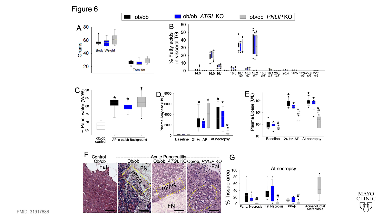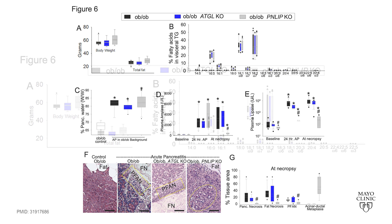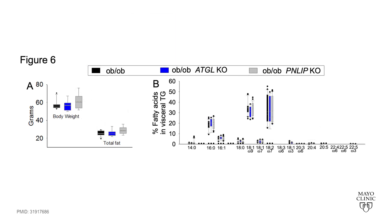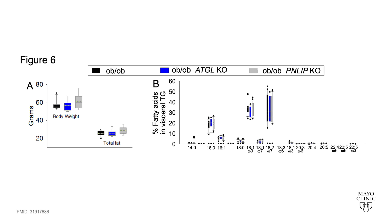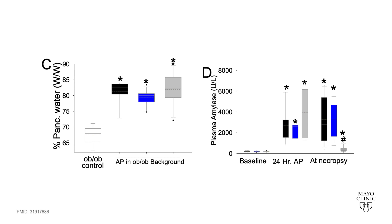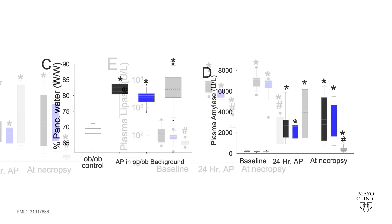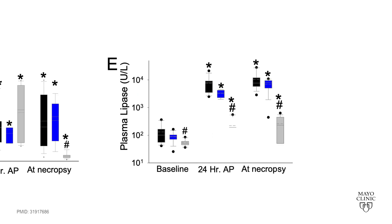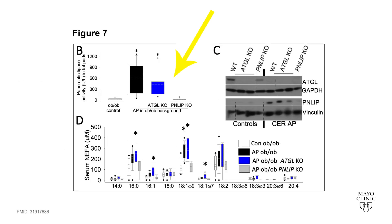In Figures 6 and 7, we use phenotypically similar genetically obese mice, some of which are knockouts for PNLIP, shown in grey, while others are knockouts for ATGL, shown in blue. We induce a common model of pancreatitis in these mice called cerulean pancreatitis. The genetic knockouts have a similar response to cerulean in terms of pancreatic edema and increase in serum amylase, which indicates initiation of pancreatitis.